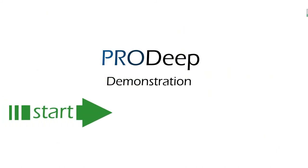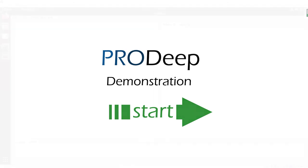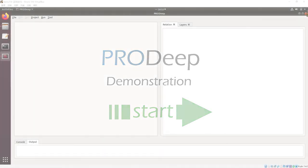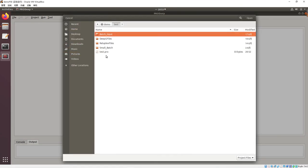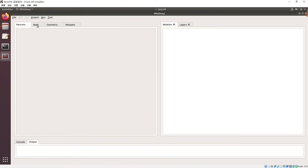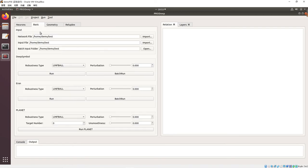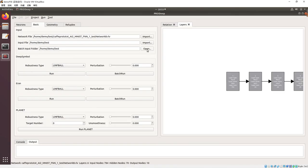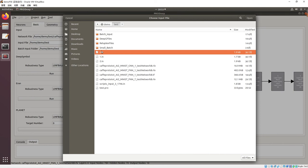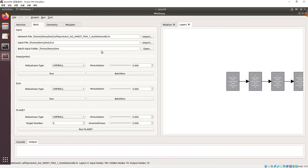We will demonstrate our tool with a small example. First, we open a project. Second, choose the network file and the interval file to verify. We can now check the network structure in the Layers tab.